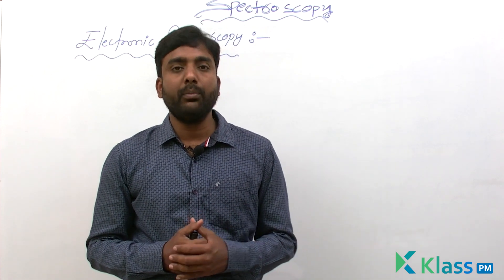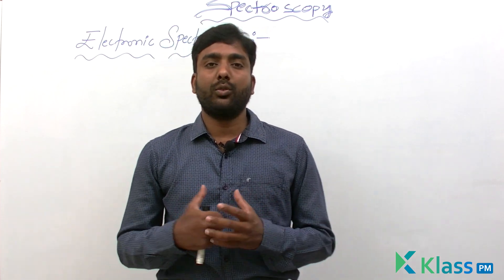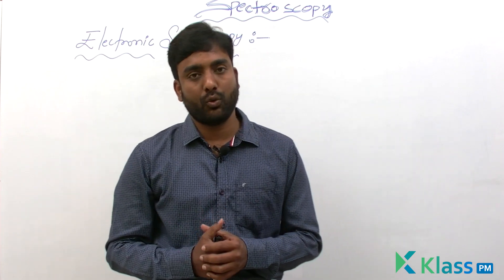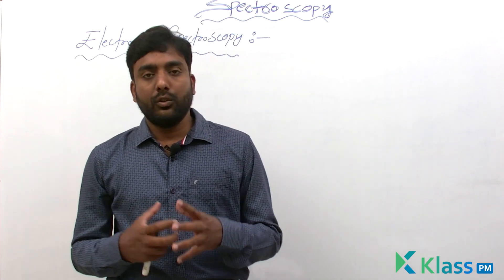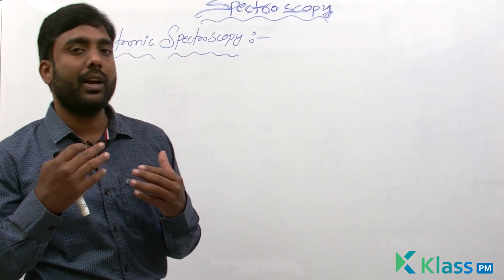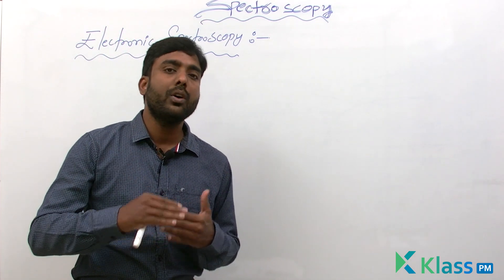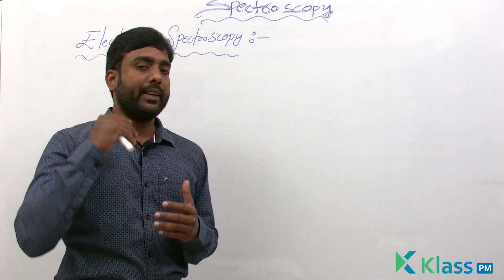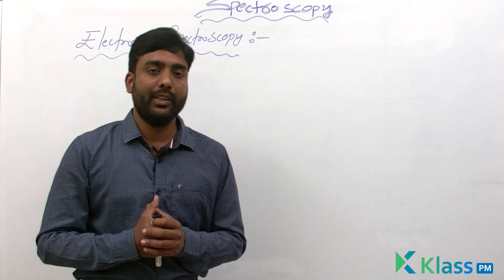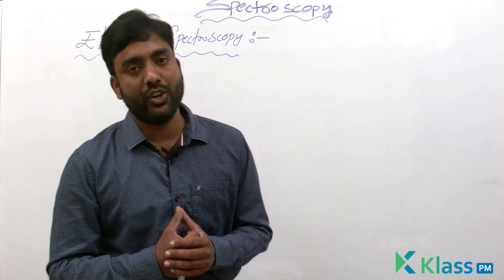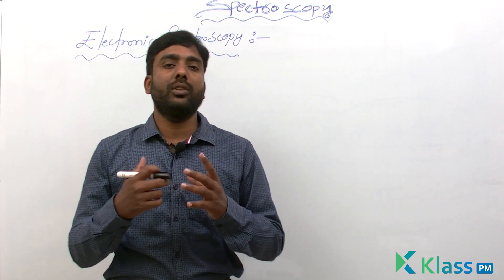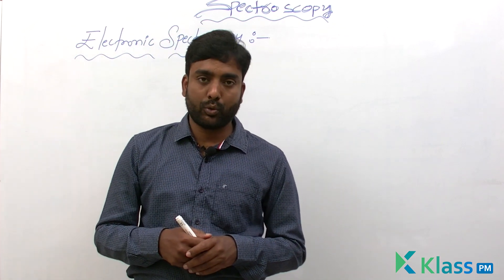Hello students, welcome to class. In today's class we are going to discuss about electronic spectroscopy. Electronic spectroscopy deals with electron transition from the ground state to excited state when it absorbs a particular wavelength or frequency of radiation. This is the major thing that happens in electronic spectroscopy.